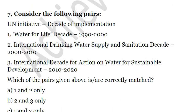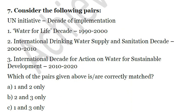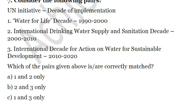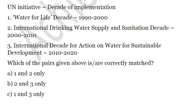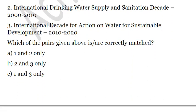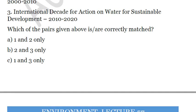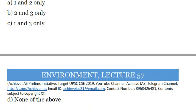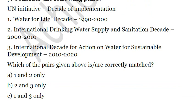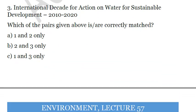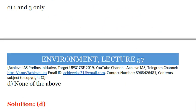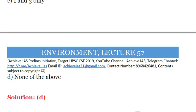The next question considers the following pairs of UN initiative and decade of implementation. First, Water for Life Decade: 1990 to 2000. Second, International Drinking Water Supply and Sanitation Decade: 2000 to 2010. Third, International Decade for Action on Water for Sustainable Development: 2010 to 2020. The answer is none of the above. In case you want the explanation, you need to subscribe for explanation PDFs — contact us at the email ID and contact number provided.